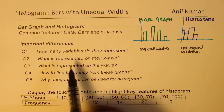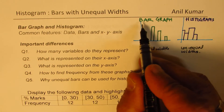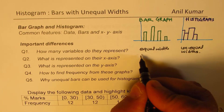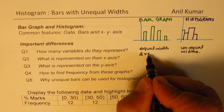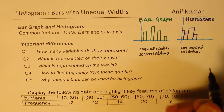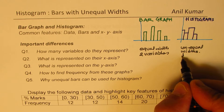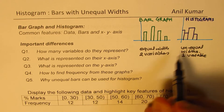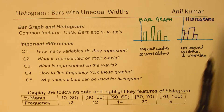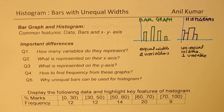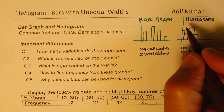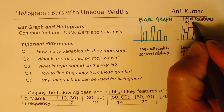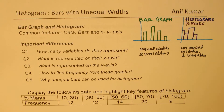To begin with variables: in a bar graph we normally have two variables, but in a histogram there will only be one variable. To give you an example — let us say we are talking about marks. In a histogram we are only looking at, let's say, percentage marks — only one variable.